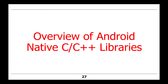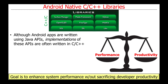Let's now switch gears and talk about the Android native C/C++ libraries that are part of the Android platform. Although Android apps are typically written using Java or more recently Kotlin, implementations of the Java APIs are often, though by no means always, written in C/C++. The reason for doing this is to provide a balance between performance and productivity. C/C++ typically provides higher performance but is harder to program, whereas Java or Kotlin are easier because of features like garbage collection, though they're not as efficient as code compiled directly to native code.